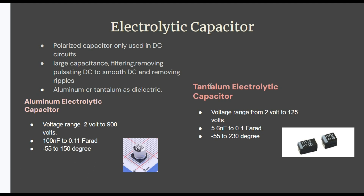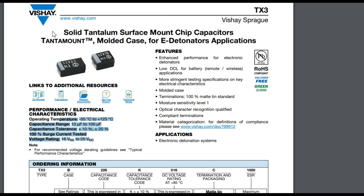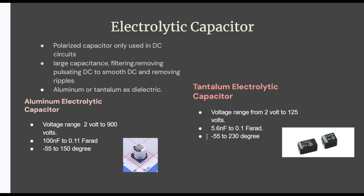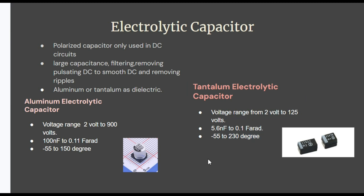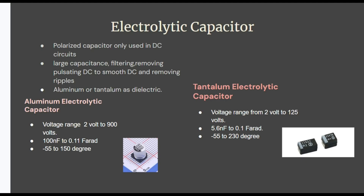In the case of tantalum capacitors, they are much more expensive but highly reliable and have a longer life compared to aluminum capacitors. They can have very high capacitance in a very small case size. Their range is from 5.6 nF to 0.1 farad, voltage range from 2 volts to 125 volts, and they can bear a very large temperature range from minus 55 to 230 degrees Celsius.